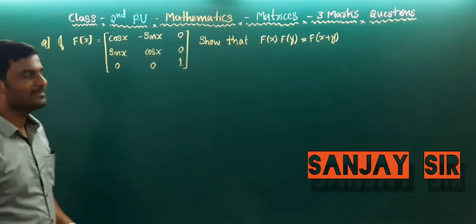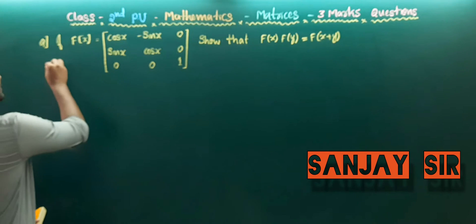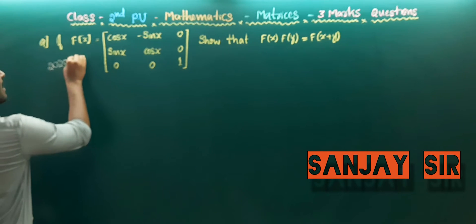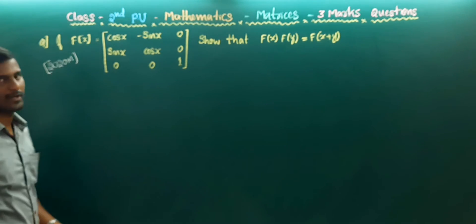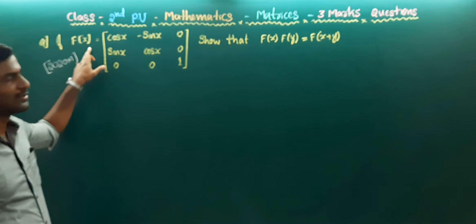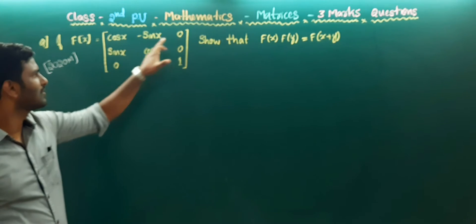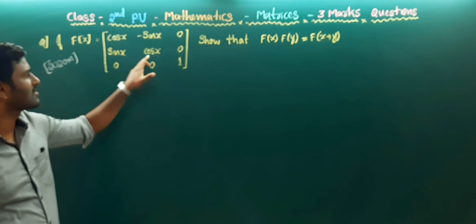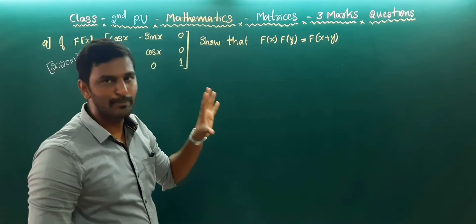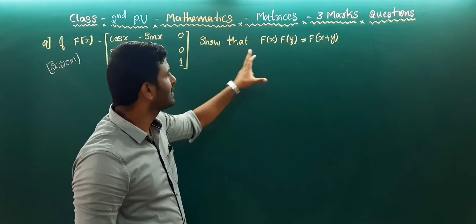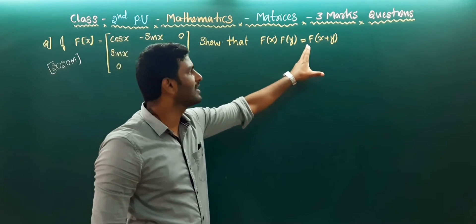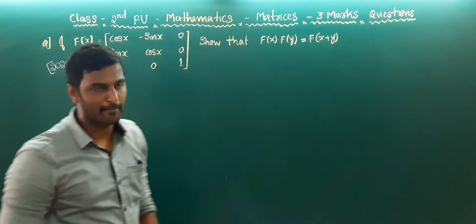The first question is a 2020 March question. The question is: f of x is equal to the matrix [cos x, -sin x, 0; sin x, cos x, 0; 0, 0, 1]. Then we have to show that f(x) into f(y) is equal to f(x+y).